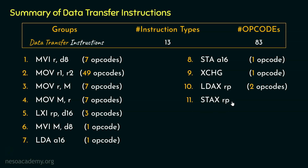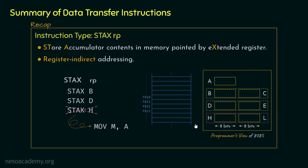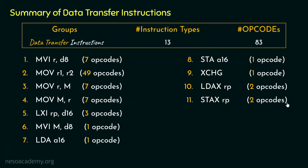The eleventh type is STAX RP. For this also we have two instructions: STAX B and STAX D. These perform exactly the opposite of LDAX B and LDAX D — we store the accumulator contents in the memory location pointed to by the extended registers BC and DE. We also don't have STAX H because MOV M, A already covers that functionality. So with this type we covered two more opcodes.